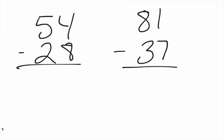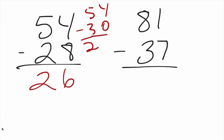Let's look at another example. We're going to round 28 up to 30. So in our head, we say 54 minus 30 is 24, plus the 2 that we went up. So 24 plus 2 is 26. We went to 30 — that's 24 there — plus the 2 we had to use to get up to 30, and that gives us 26.